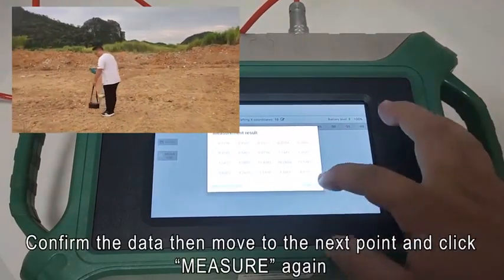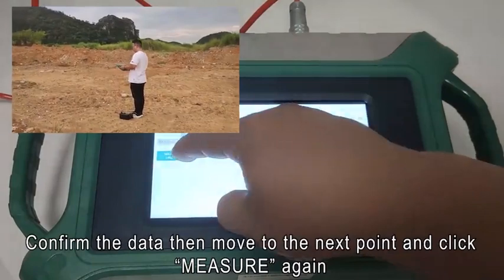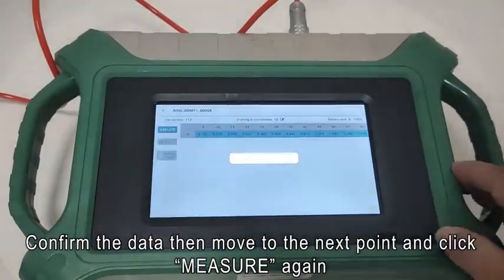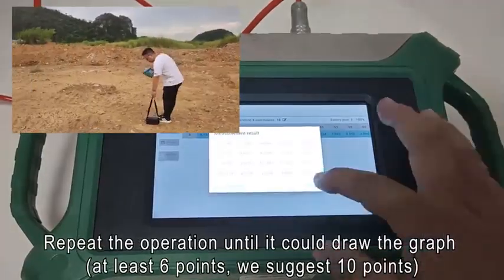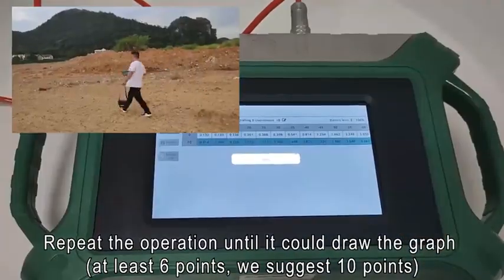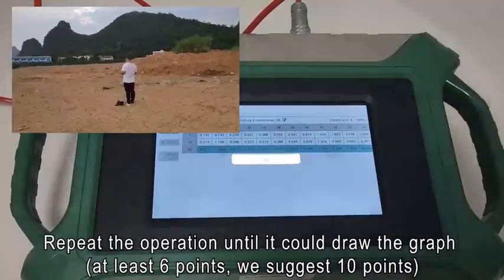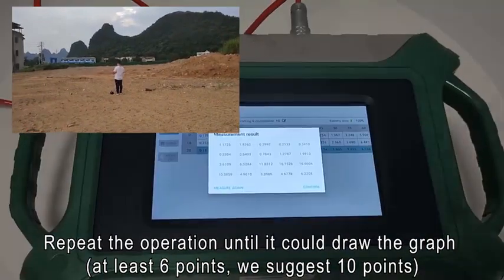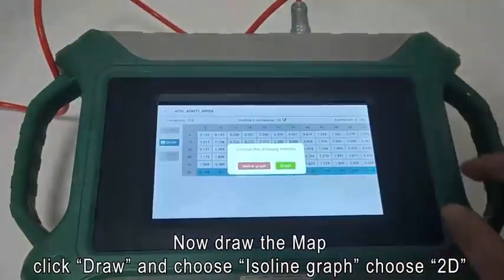Confirm the data, then move to the next point and click measure again. Repeat the operation until it could draw the graph. At least 6 points, we suggest 10 points.